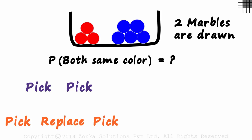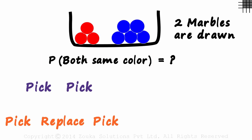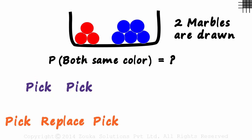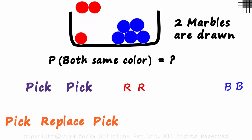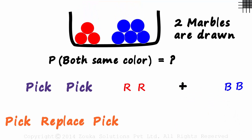So what is asked? We have to find the probability of both marbles being of the same color. We can pick a red and a red, or a blue and a blue. Because there is an OR, we write a plus sign: probability of both being red plus the probability of both being blue.